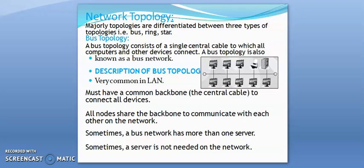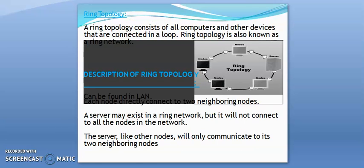A bus topology is very common in LANs. It must have a common backbone — that is, the central cable — to connect all devices. All nodes share the backbone to communicate with each other on the network. Sometimes a bus network has more than one server; sometimes a server is not needed on the network.